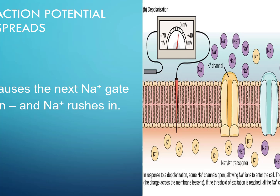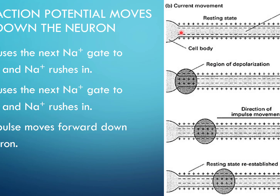Action potential spreads. A stimulus causes sodium gates to open; sodium rushes into the cell. That causes other sodium gates right next to it to open, and more sodium rushes in — this is depolarization of the cell. The membrane potential goes from negative to positive. This causes further gates to open and the cell to become positive next to that, and the action potential rushes down the membrane as sodium gates open all the way down.